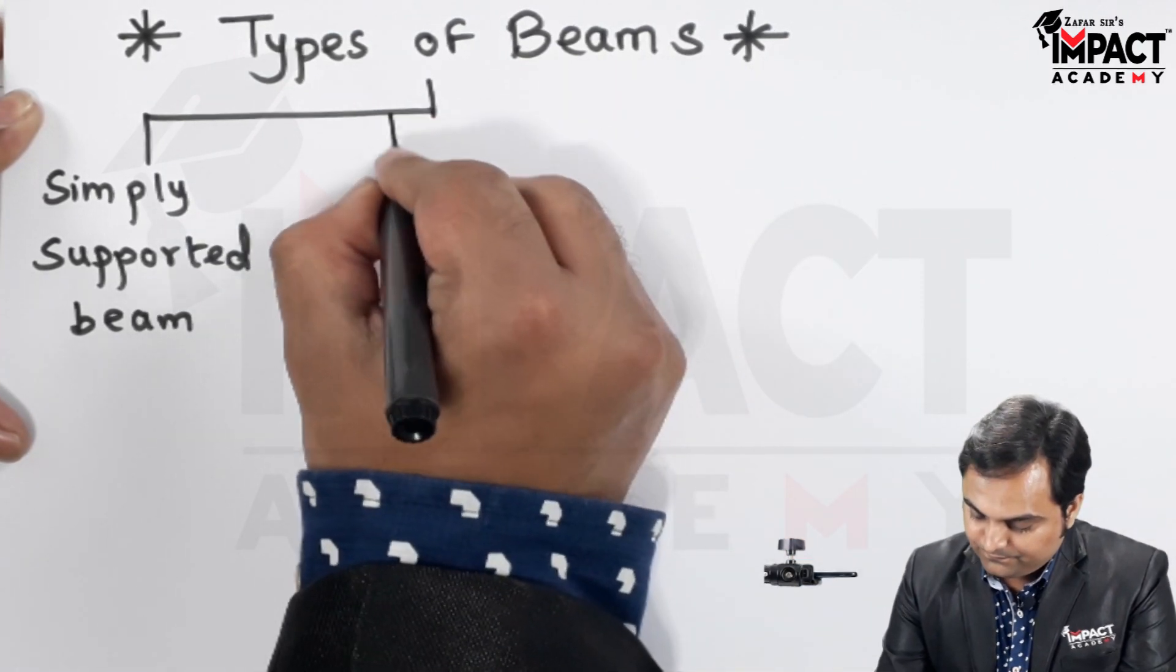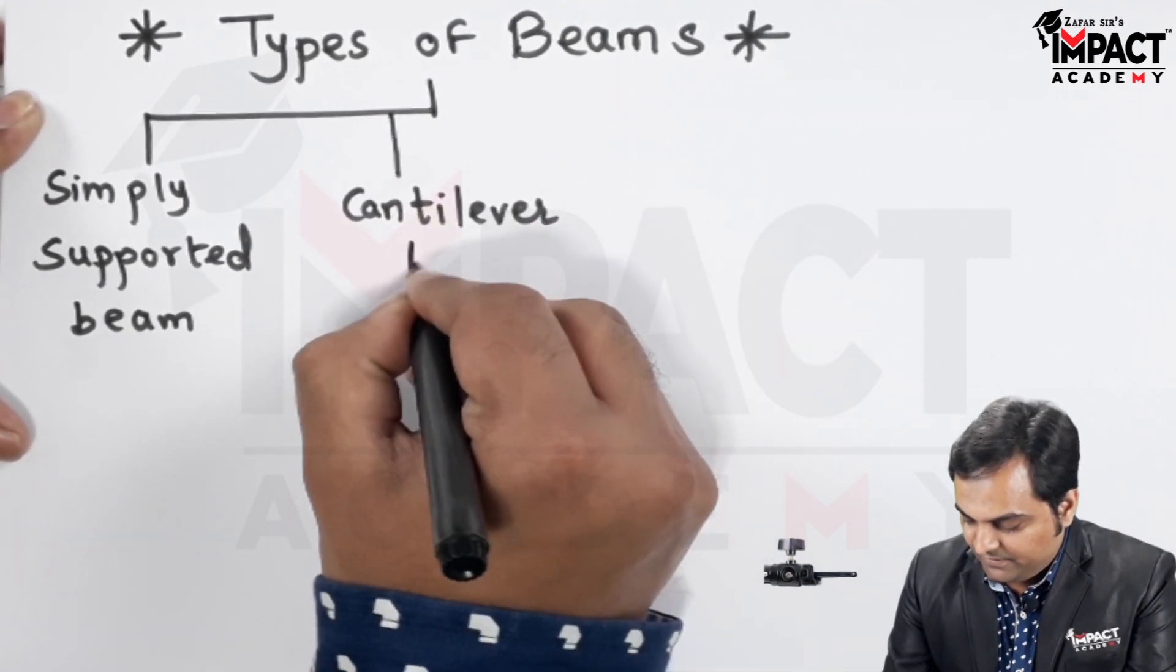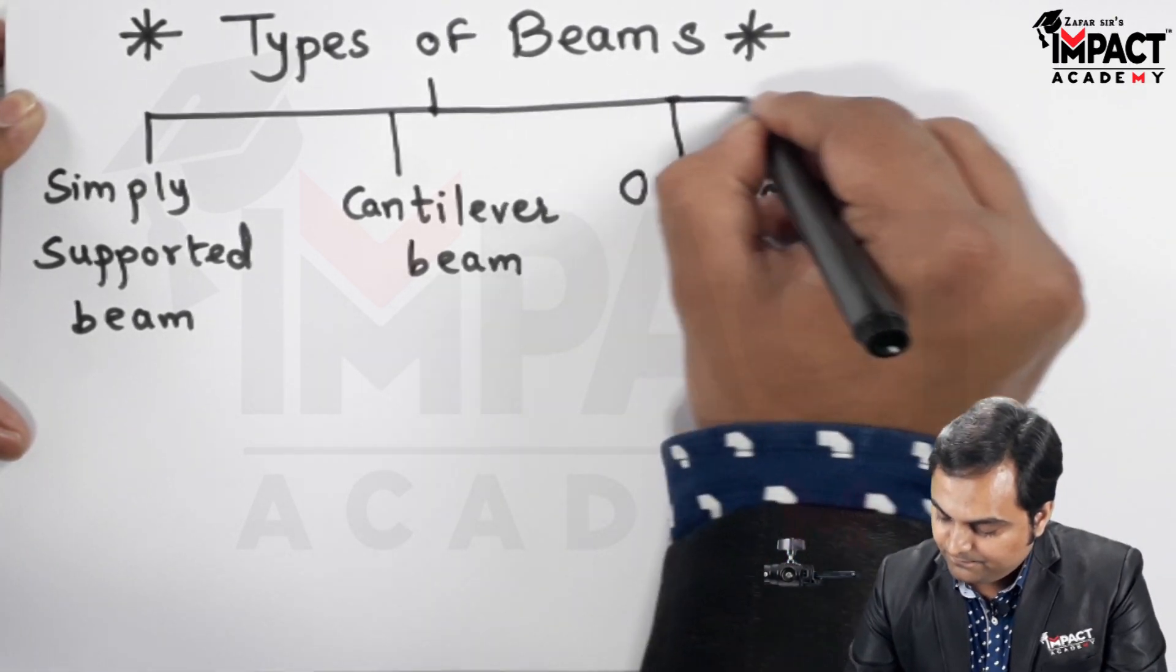The different types of beams are: I will give the classification. Simply supported beam, then cantilever beam, overhanging beam and continuous beam.